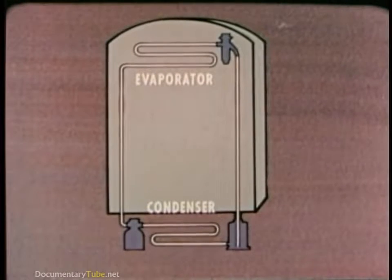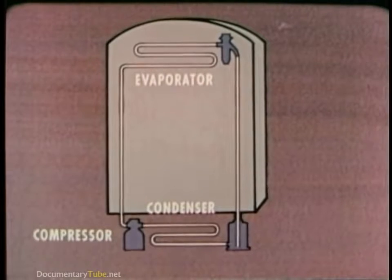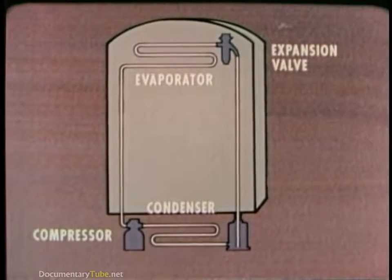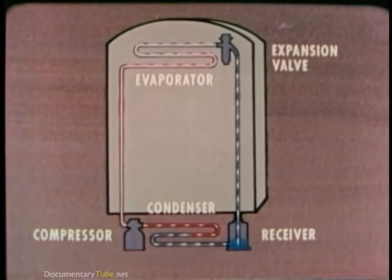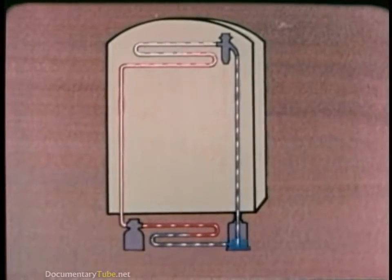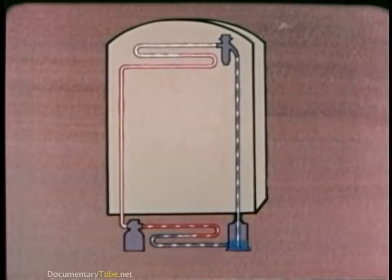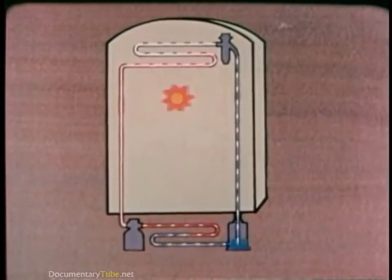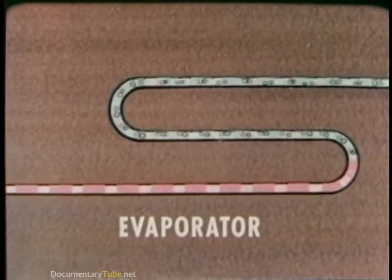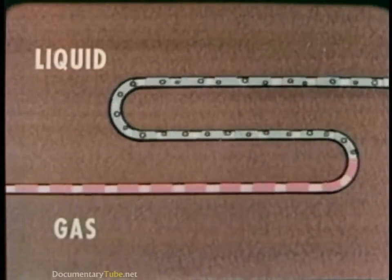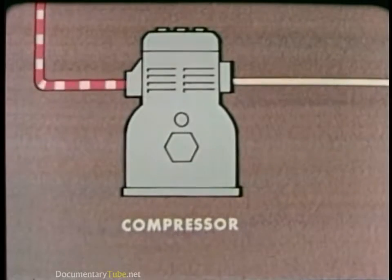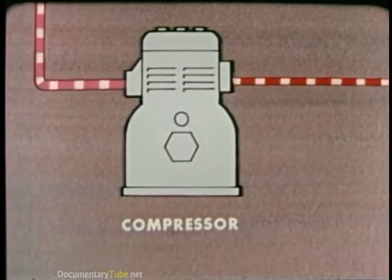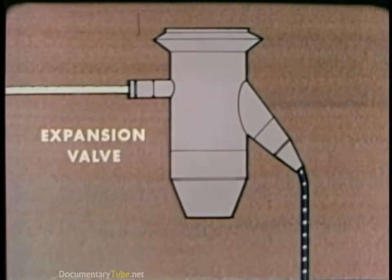Also in the system are the compressor, which is a pump, the expansion valve, and in many systems the receiver, a kind of storage tank. A chemical substance called the refrigerant flows through the system. It's the refrigerant that picks up BTUs of heat from inside the box and discards them outside. In the process, the refrigerant changes from a liquid to a gas. Then in the condenser it changes back to a liquid. At the same time, the pressure increases in the compressor and decreases in the expansion valve.